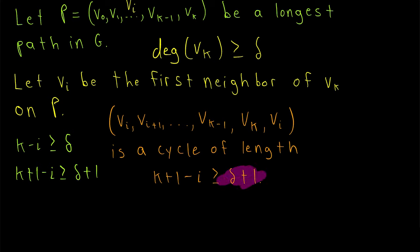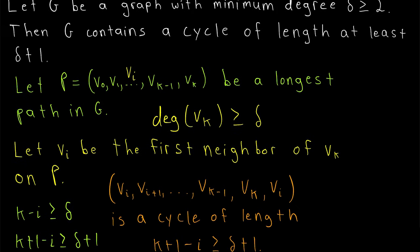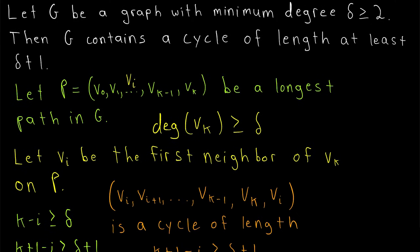A cycle whose length is at least 1 greater than the minimum degree of the graph. I hope this video helped you understand the proof. Let me know in the comments if you have any questions, need anything clarified, or have any other video requests. Thank you very much for watching.